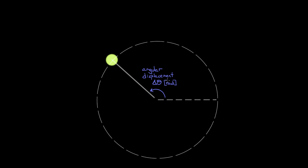How would we convert angular displacement into a regular motion variable? The regular displacement for the ball going from one point to another would be the straight-line distance between those two points — the regular linear displacement. That's a little weird, and would require the law of cosines, which is more in depth than needed here.